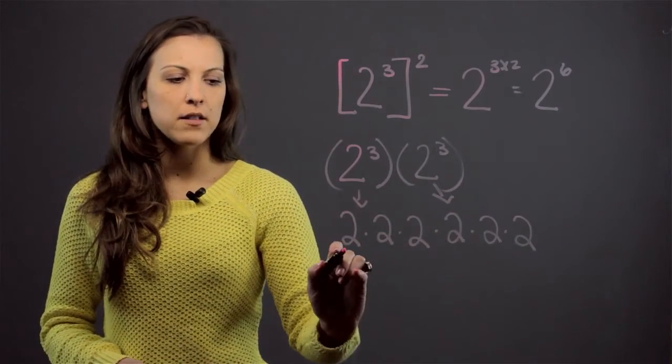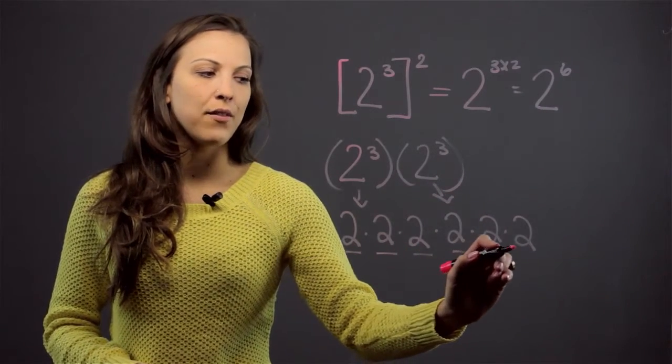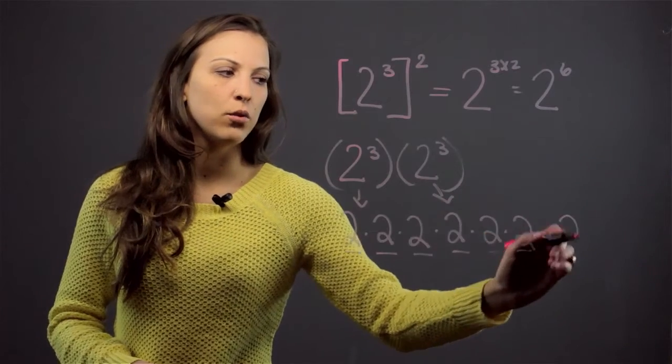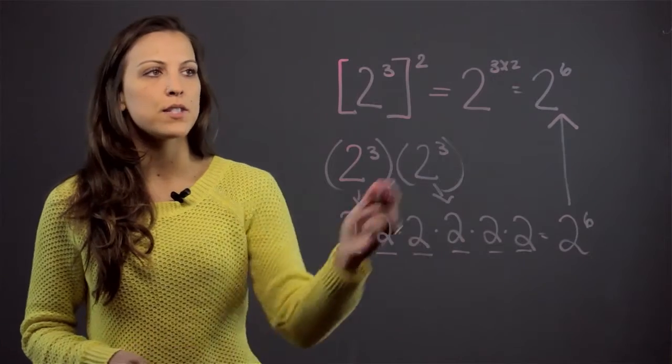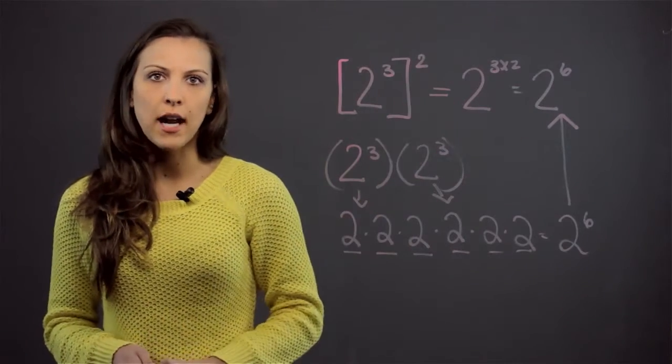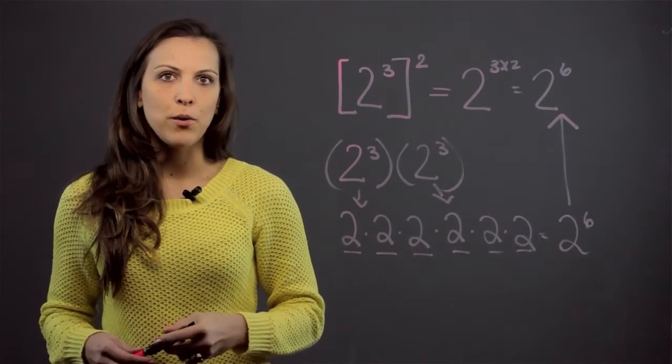So once I expand this, I realize there are 1, 2, 3, 4, 5, 6 2s. This is 2 being raised to the 6th power, which is the same answer that I got by using the power-to-power law, which said multiply the two exponents together. So that is how you do exponents when you have brackets.